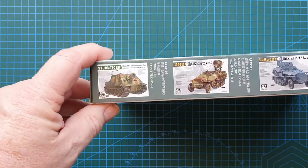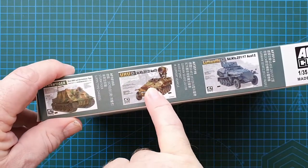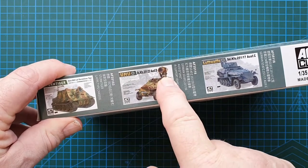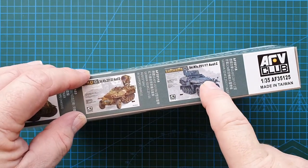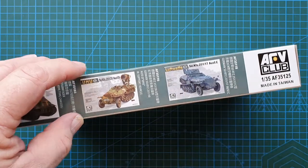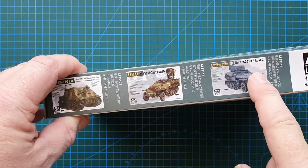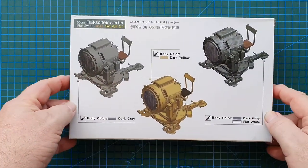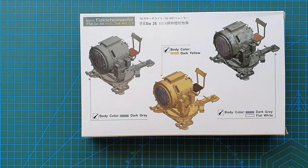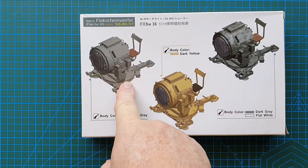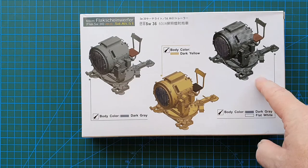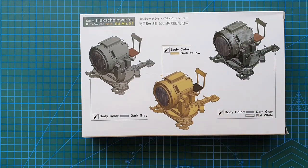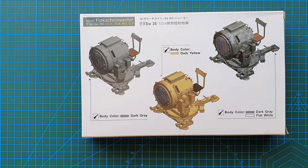On the other side we've got Stern Tiger Sd.Kfz.251/20 with the searchlight on it, Uhu which basically means owl, another Luftwaffe 251/17 with the flak gun on it. On the back you've got the colors for this - basic colors - for the searchlight: overall dark gray, overall dark yellow, this one is dark gray with white splotches camouflage, basically I guess for winter.